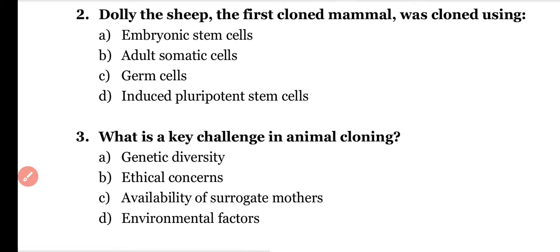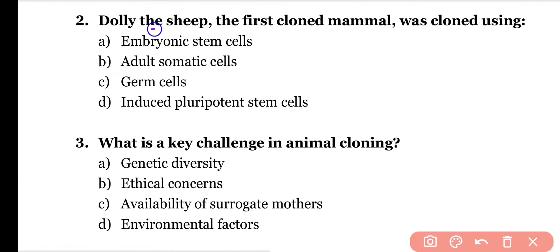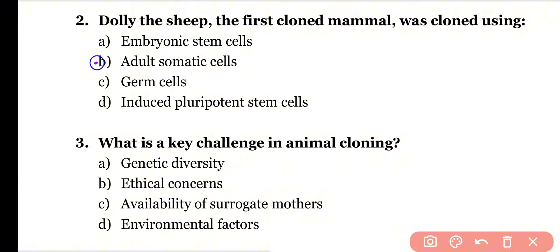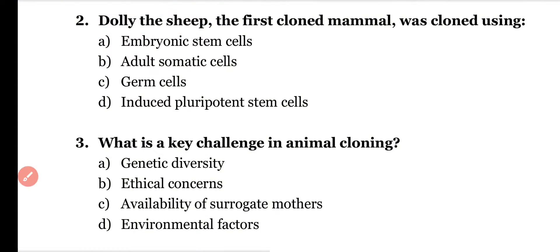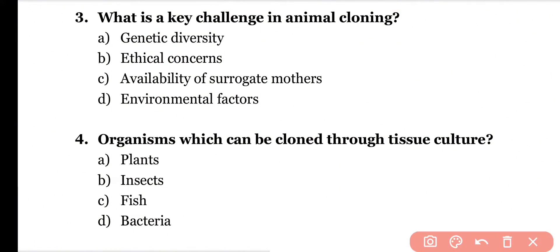Question number two: Dolly the sheep, which was the first cloned mammal, was cloned using which cells? Options: embryonic stem cells, adult somatic cells, germ cells, induced pluripotent stem cells. Correct answer is option B. Adult somatic cells were used for the cloning of Dolly the sheep.